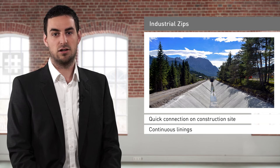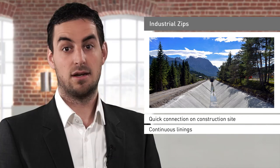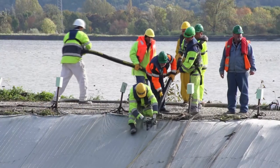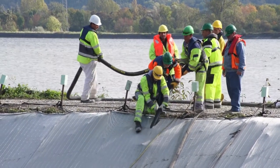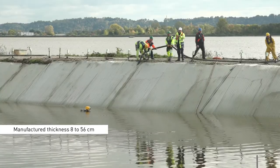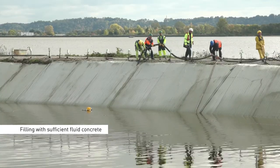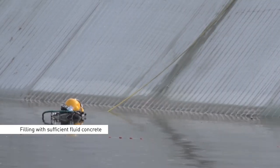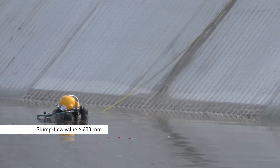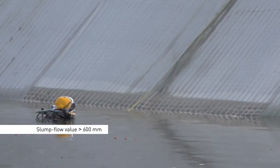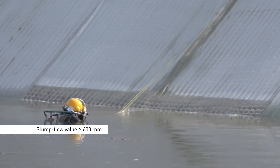The second crucial system component, particularly for linings, is the concrete. To ensure complete filling of the geotextile mattresses, whose spacer lengths can range between 8 cm and 56 cm, the concrete fill needs to be sufficiently fluid. Self-compacting concretes with a slump flow value greater than 600 mm have proved particularly advantageous.